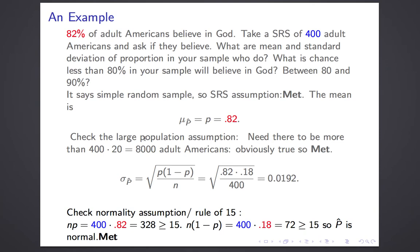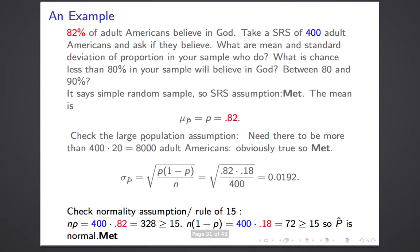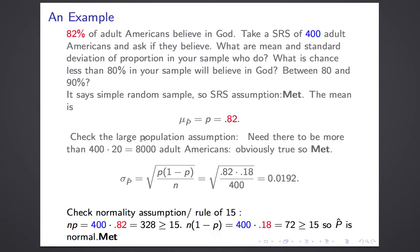And finally, we need to check the normality assumption, which is the rule of 15. We compute N times P, 400 times 0.82, that's 328. And N times 1 minus P, 400 times 0.18, that's 72. Since both are more than 15, we can assume P-hat is normal.